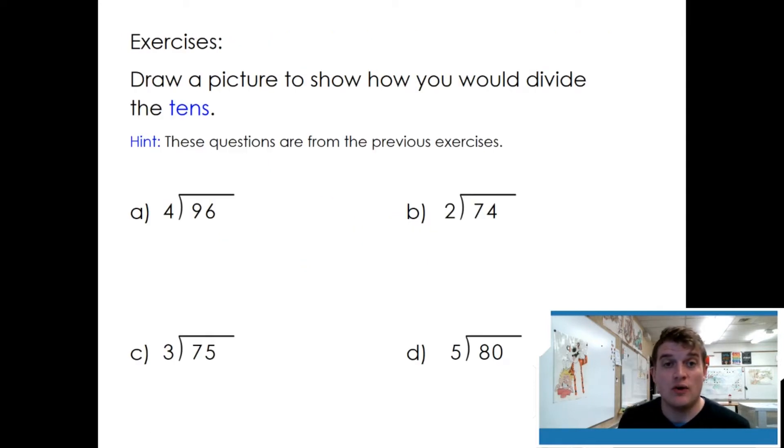Draw a picture to show how you would divide the tens. Ninety-six divided by four. Four friends, nine tens. Ten, twenty, thirty, forty, fifty, sixty, seventy, eighty-six. One ten left over. Try the next three.